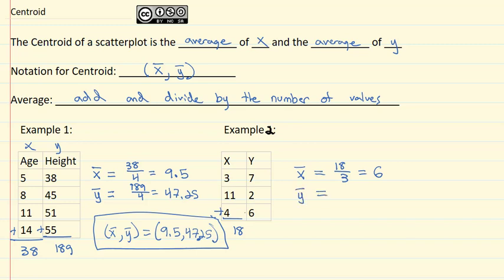Then we find the average y by adding the y's together. 7 plus 2 plus 6 is 15. 15 divided by 3 is 5. So our centroid x bar y bar is equal to the average point 6 comma 5.